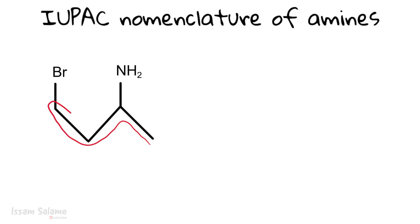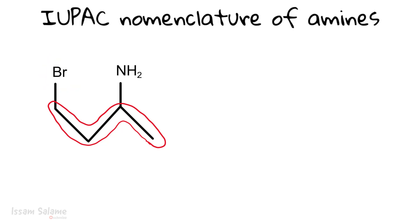To name this amine, we look for the longest chain. The amino group has priority over the bromo group, so we start counting from the right side: carbon one, two, three, and four. The name of this amine is 4-bromo-2-butanamine.